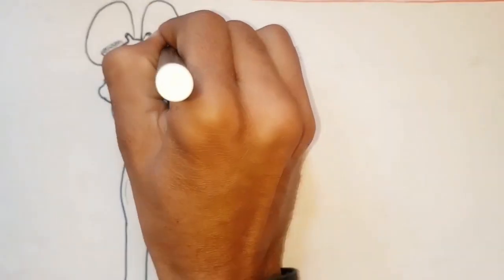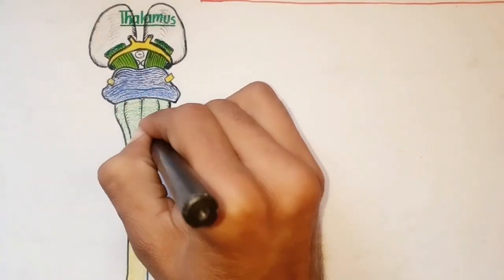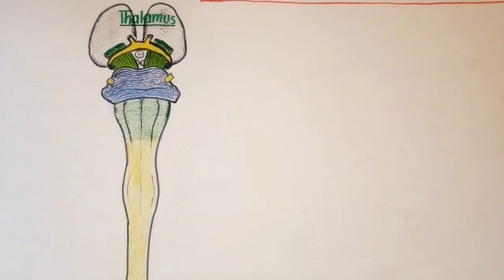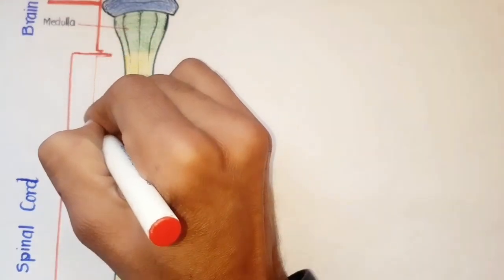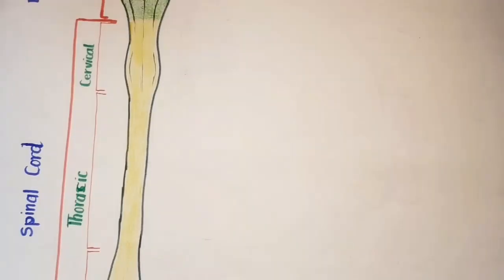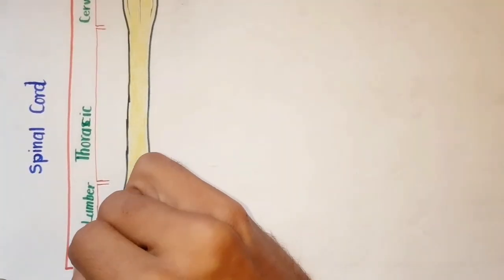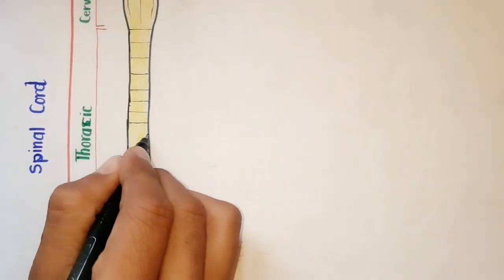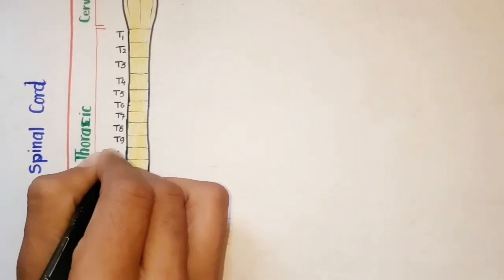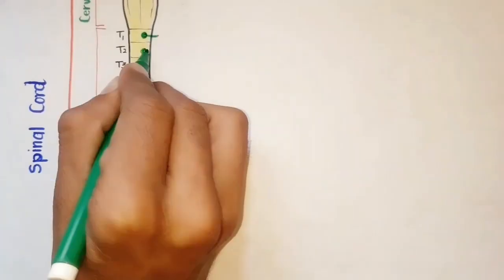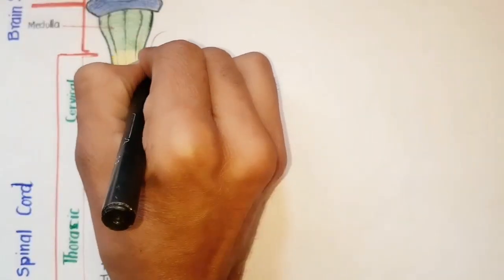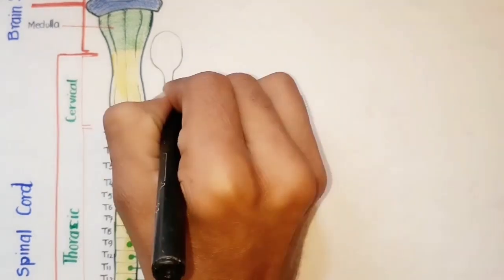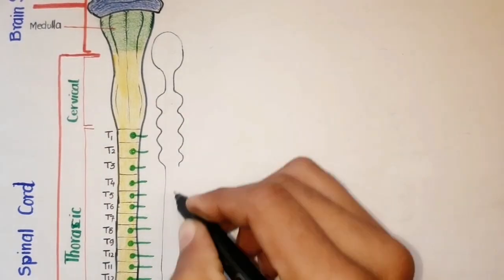Here I am drawing the brainstem and spinal cord. As mentioned earlier, sympathetic neurons arise from the thoracic and lumbar regions. I am dividing the spinal cord into cervical, thoracic, lumbar, and sacral segments. In this diagram, the sympathetic neurons arise from the 12 thoracic and first two lumbar segments of the spinal cord. Before going into the nerve pathways to each organ, let's talk about the sympathetic ganglia first.